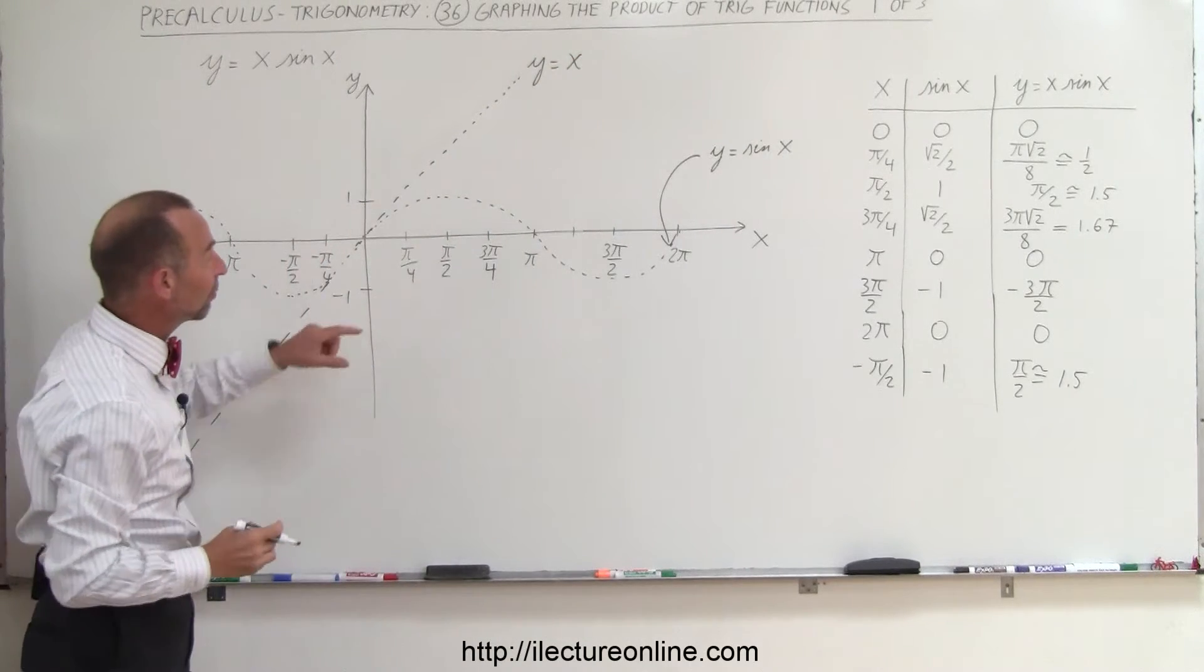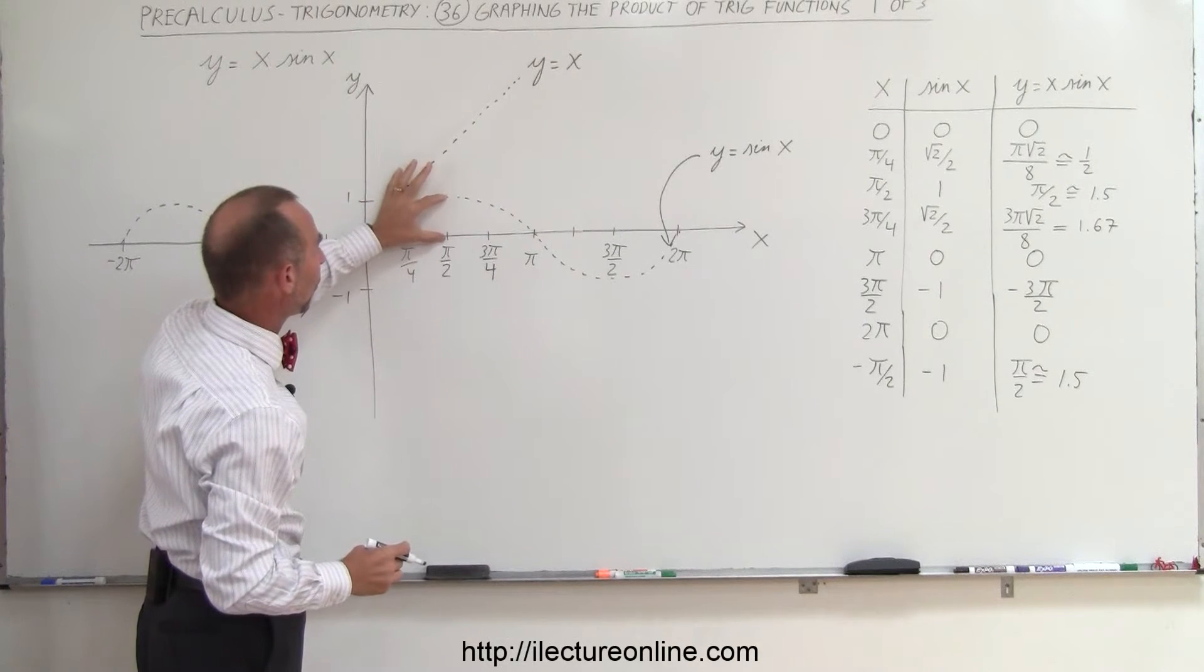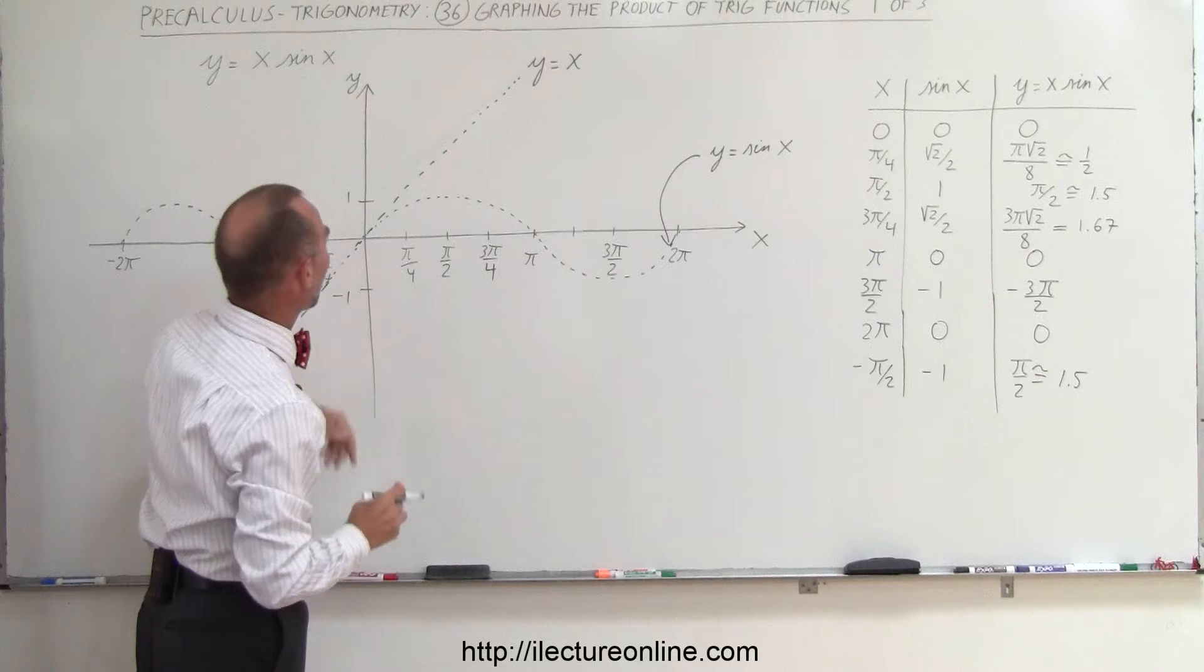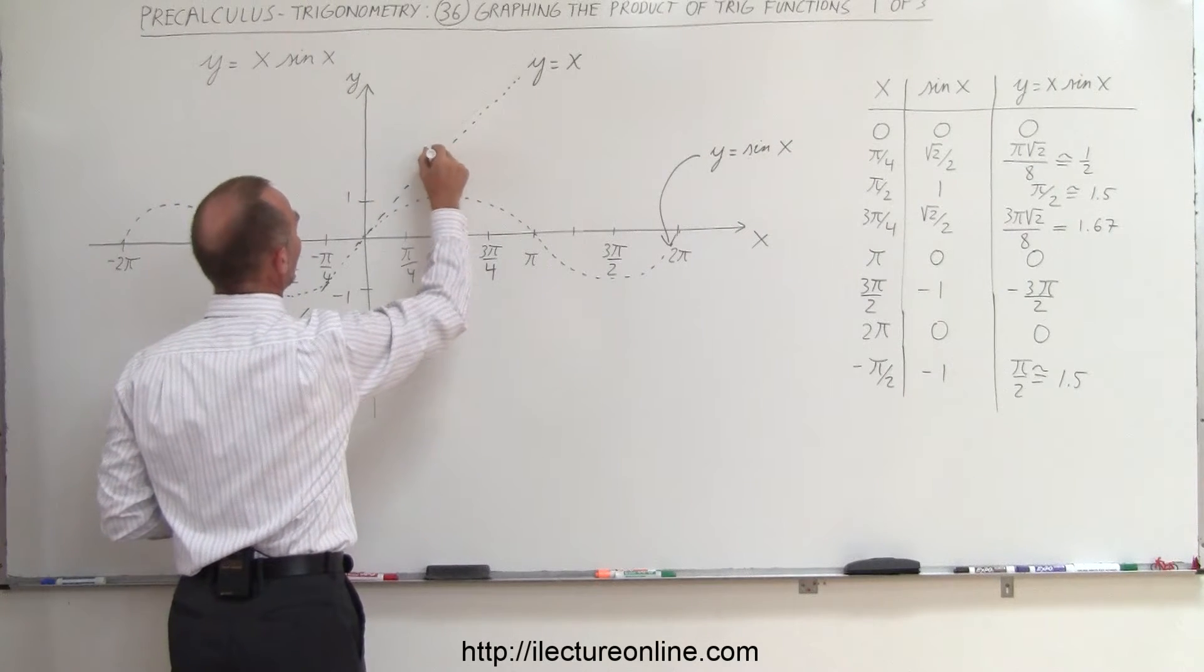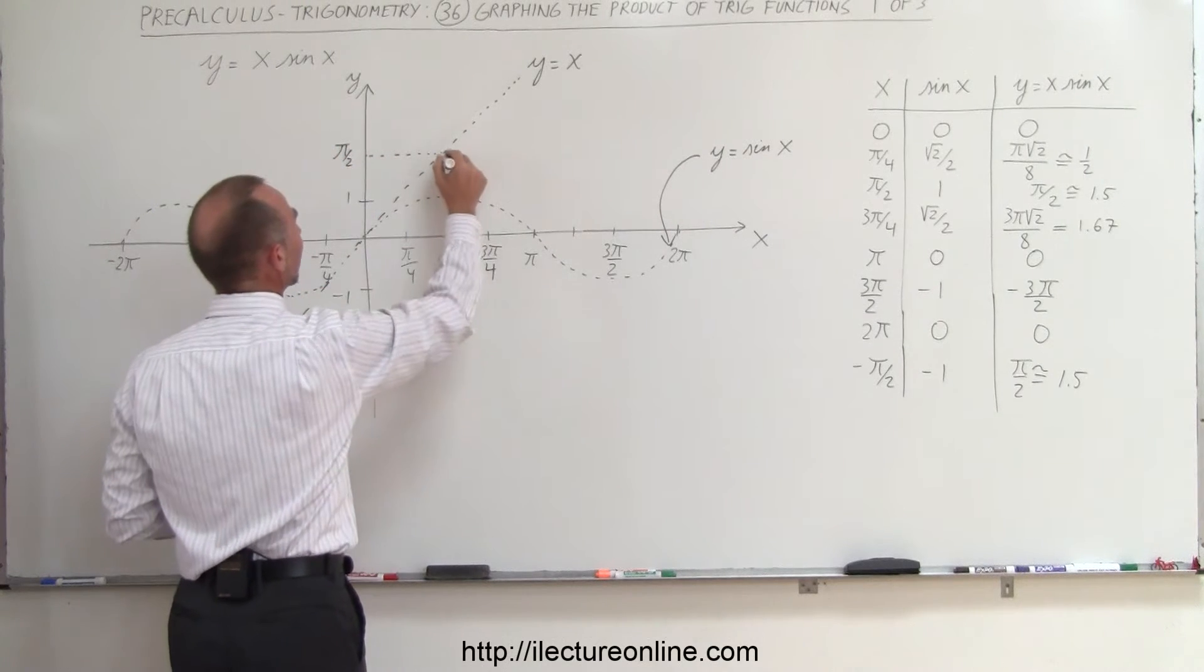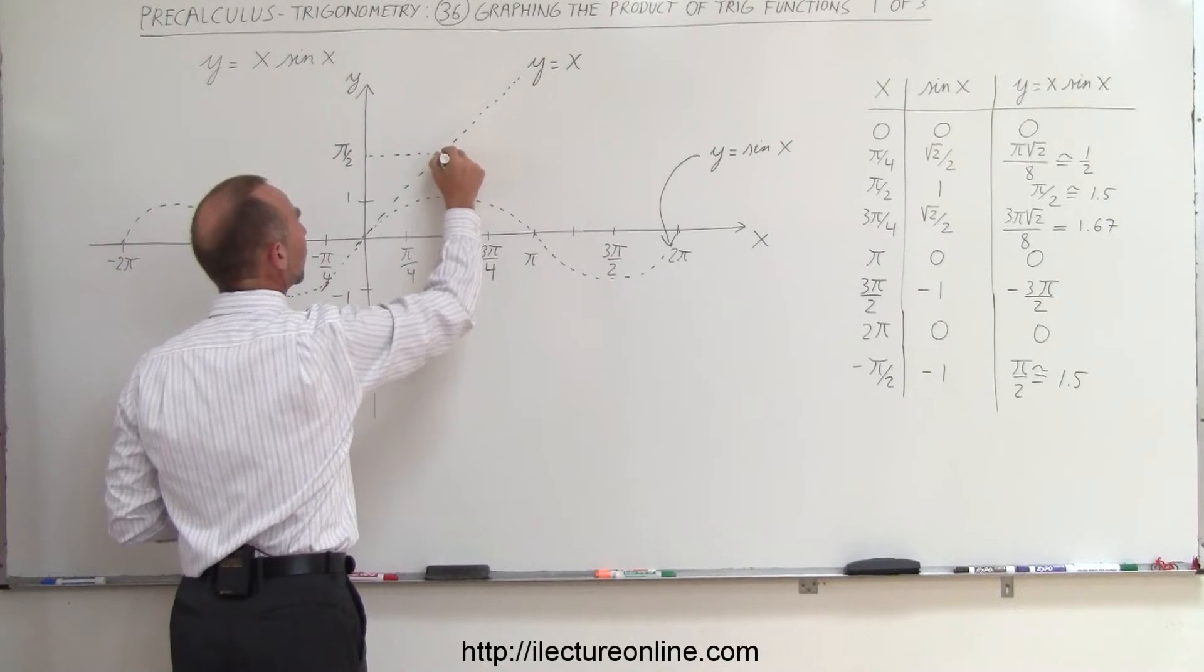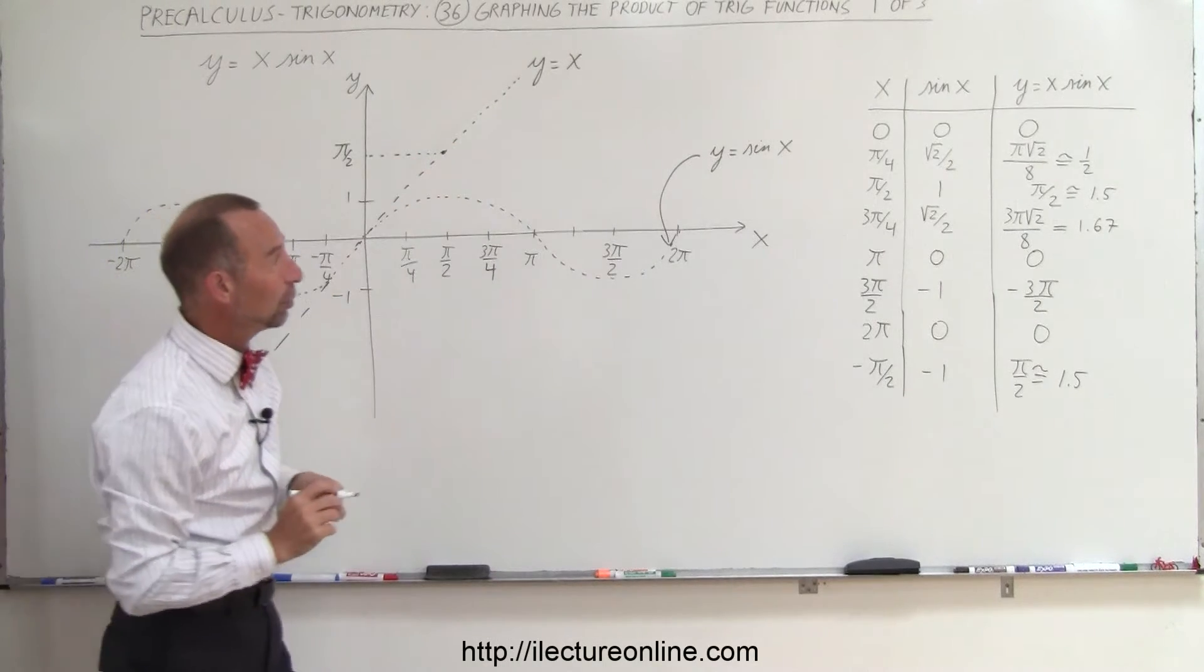And now we need the product of the two. Now what the product means is, for example, right here, when y equals the sine of x equals 1, and when x is pi over 2, then we know that y is pi over 2. And then we have to multiply those two together. That means that the product will be equal to that value, the product of 1 times pi over 2.